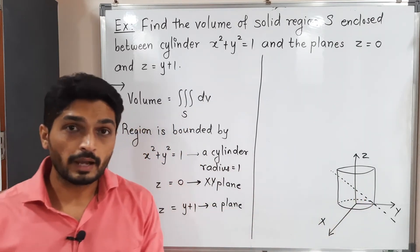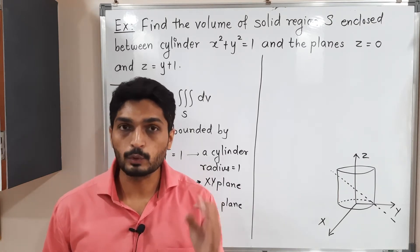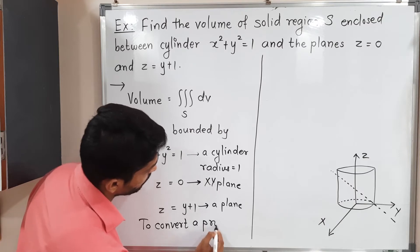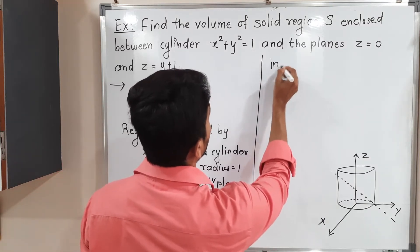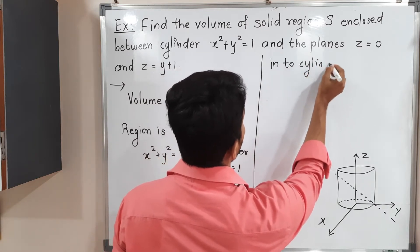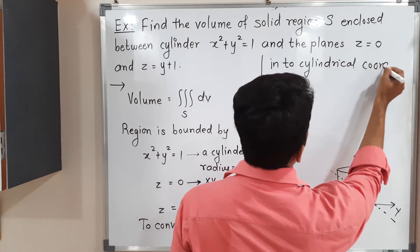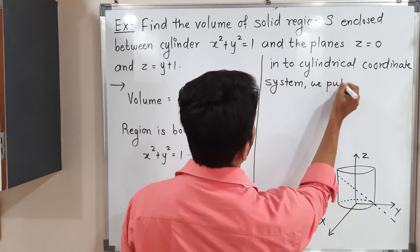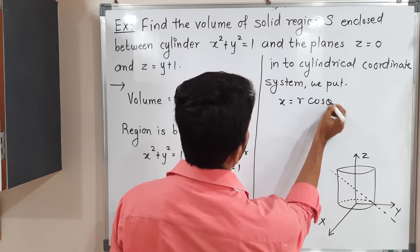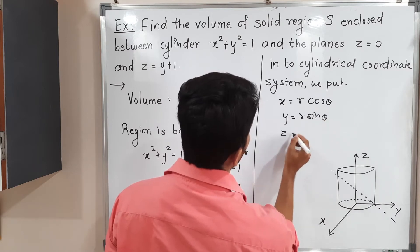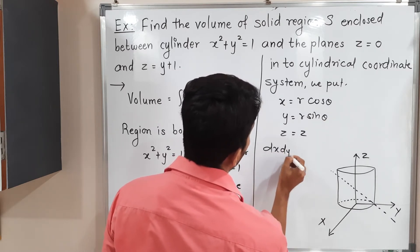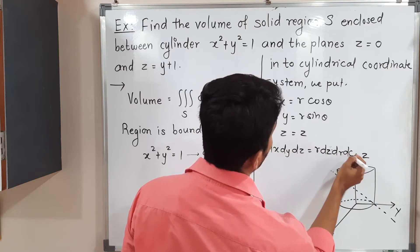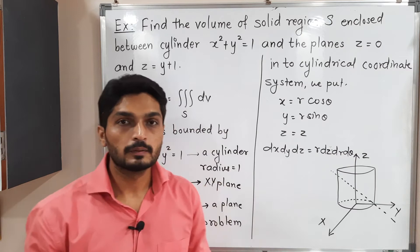Since we have a cylinder, we convert the problem into the cylindrical coordinate system. In cylindrical coordinates, we substitute: x = r cosθ, y = r sinθ, z = z, and dx dy dz = r dr dz dθ.